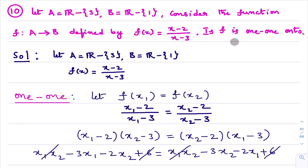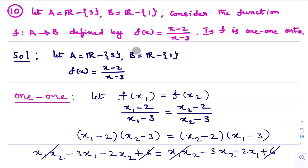They are asking: is f one-one and onto? That means you need to check one-one function and onto function. This question is easy but has a lengthy pattern. They given set A, set B and that f is from A to B, and the function is defined as f(x) = (x-2)/(x-3). This is the given information from the question.